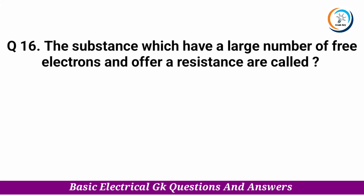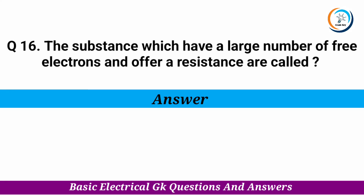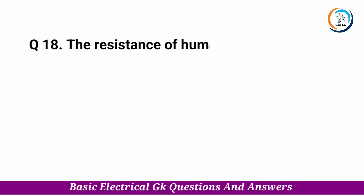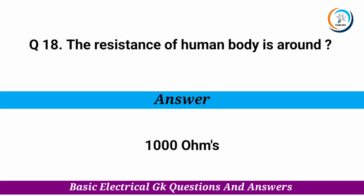The substances which have a large number of free electrons and offer low resistance are called — Answer: conductors. The resistance of the human body is around — Answer: 1000 ohms.